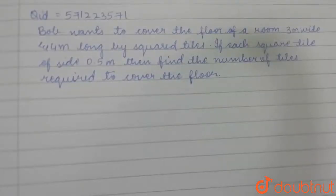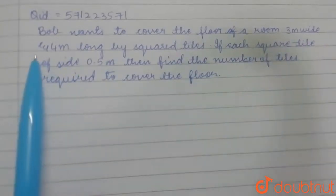of a room 3 meters wide and 4 meters long by square tiles. If each square tile is of side 0.5 meter, then find the number of tiles required to cover the floor. Now here, he has given a floor which is generally rectangular in shape, and he has already told that it is 3 meters wide and 4 meters long.